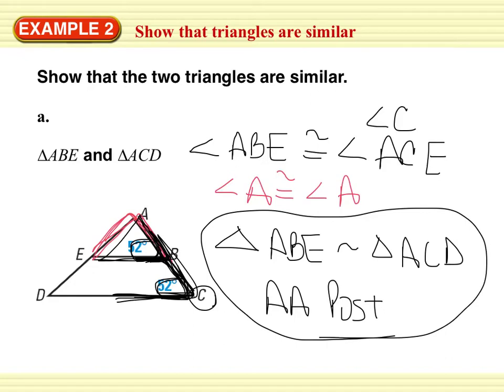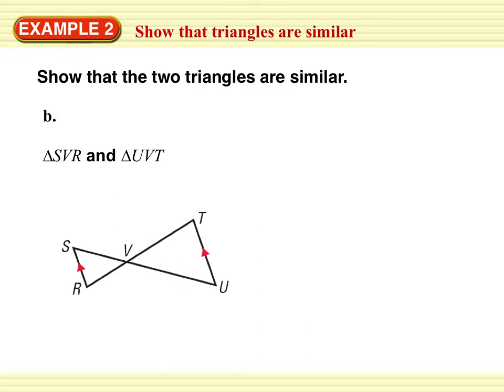Let's try the next one. Show that the two triangles are similar. Triangle SVR and triangle SVR and UVT. So let's mark the things that we know. We're really stretching back with this one. I have parallel lines and a transversal.